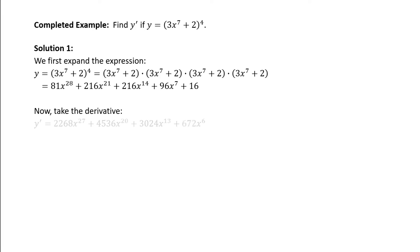Now we can take the derivative. Using the power rule, y prime equals: bringing down the 28, 28 times 81 is 2268x to the 27th, plus bringing down the 21, that product is 4536x to the 20th, plus 14 times 216 is 3024x to the 13th, plus 7 times 96 is 672x to the 6th. The derivative of 16 is 0. That was fun.